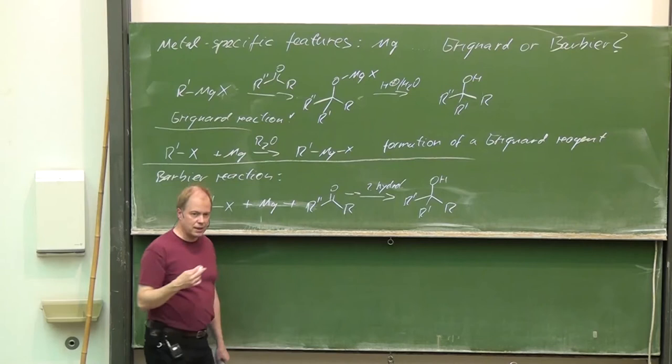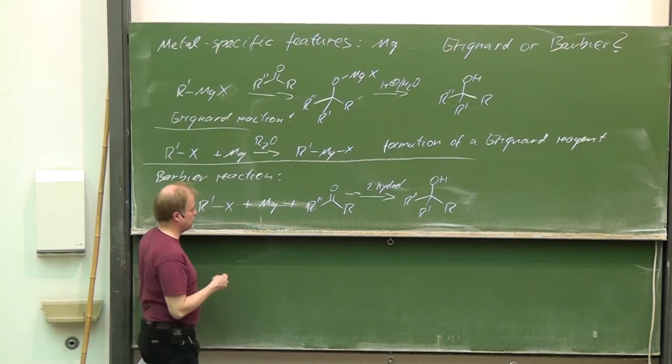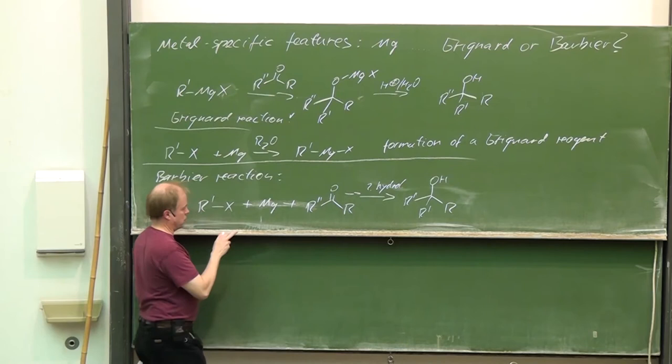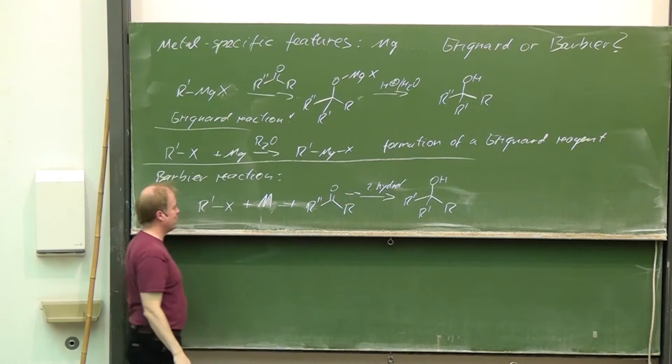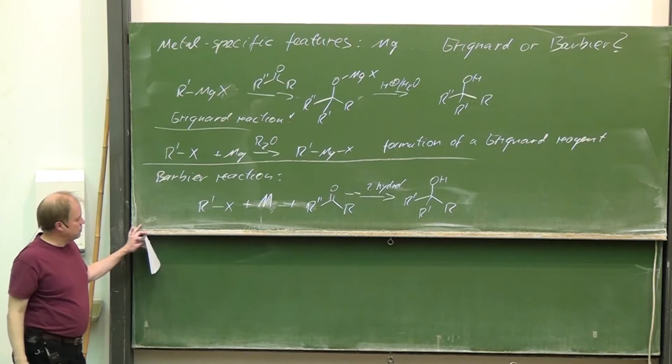Actually, Barbier reactions or Barbier-type reactions, which is often the expression in use, are not restricted to magnesium. You just could put in here a metal, and lots of metals are able to show this reaction. Lots of metals work just fine.